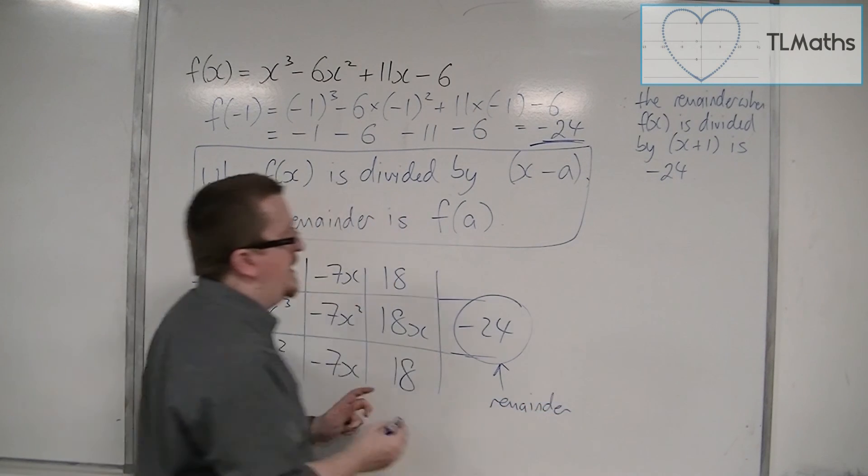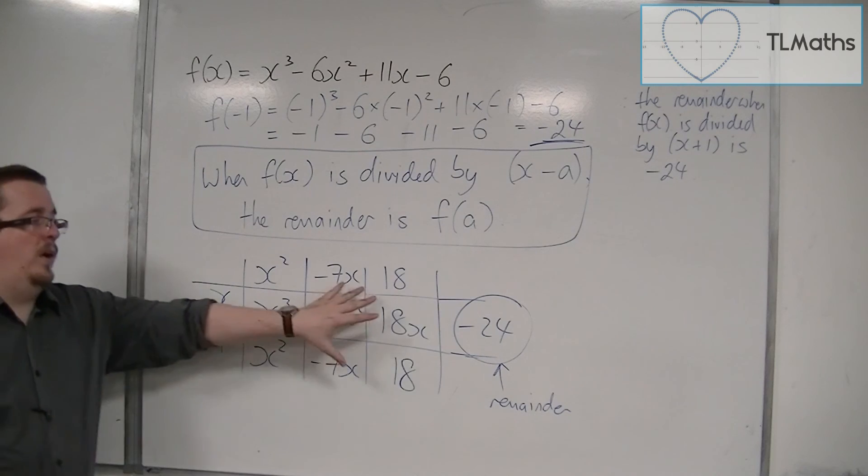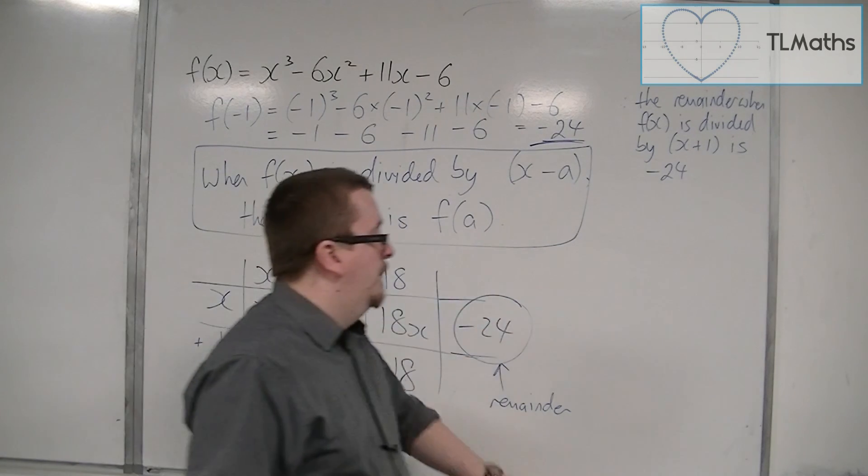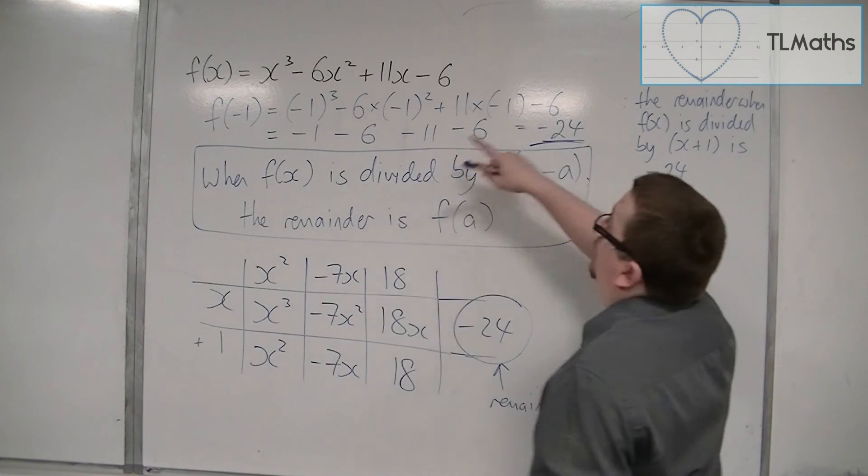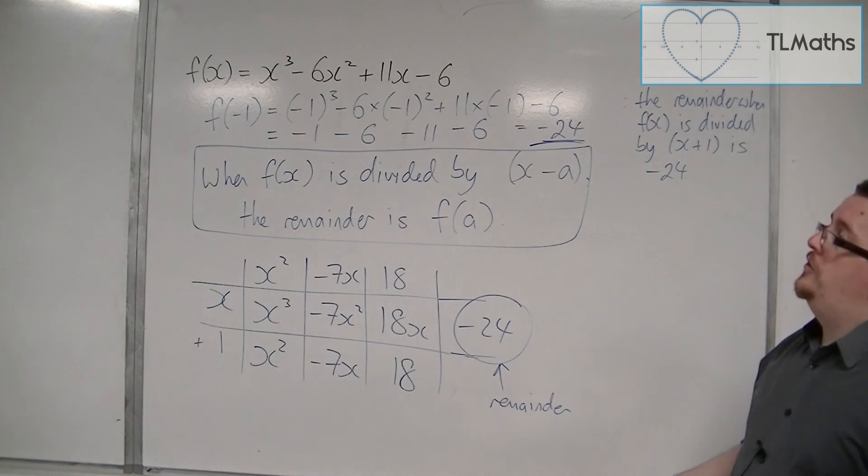So we can see that using polynomial division, I get the same number as I would if I substituted -1 into my polynomial.